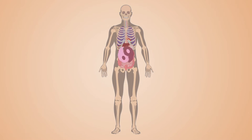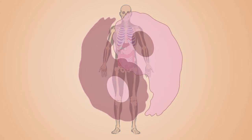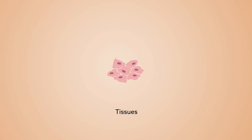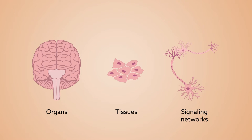In complex organisms, cells must work in harmony to produce a functional whole. Together, they form the tissues, organs, and signaling networks that make life possible.